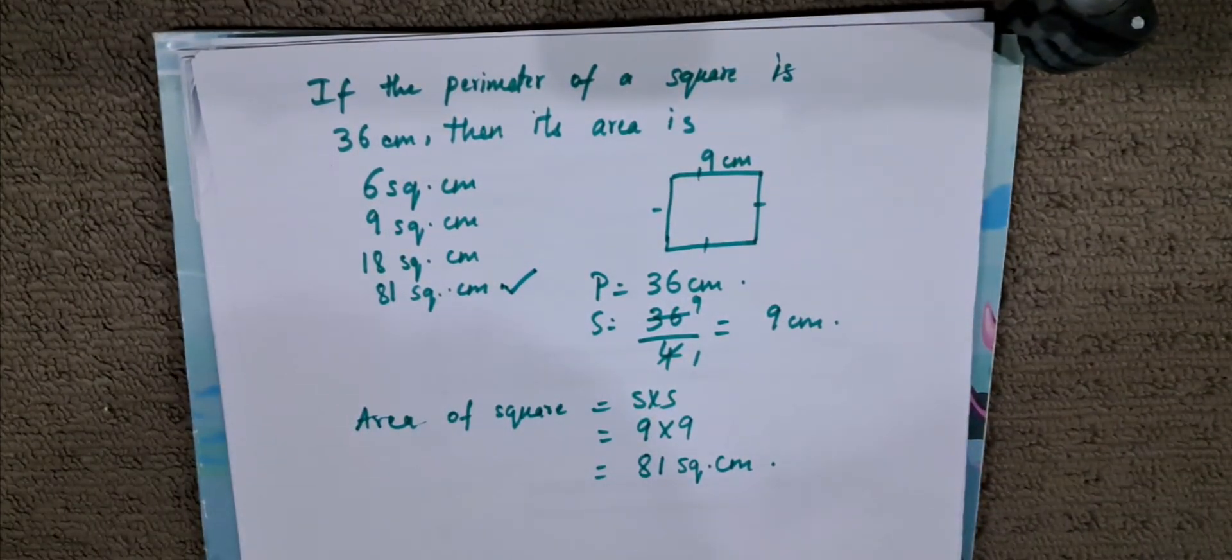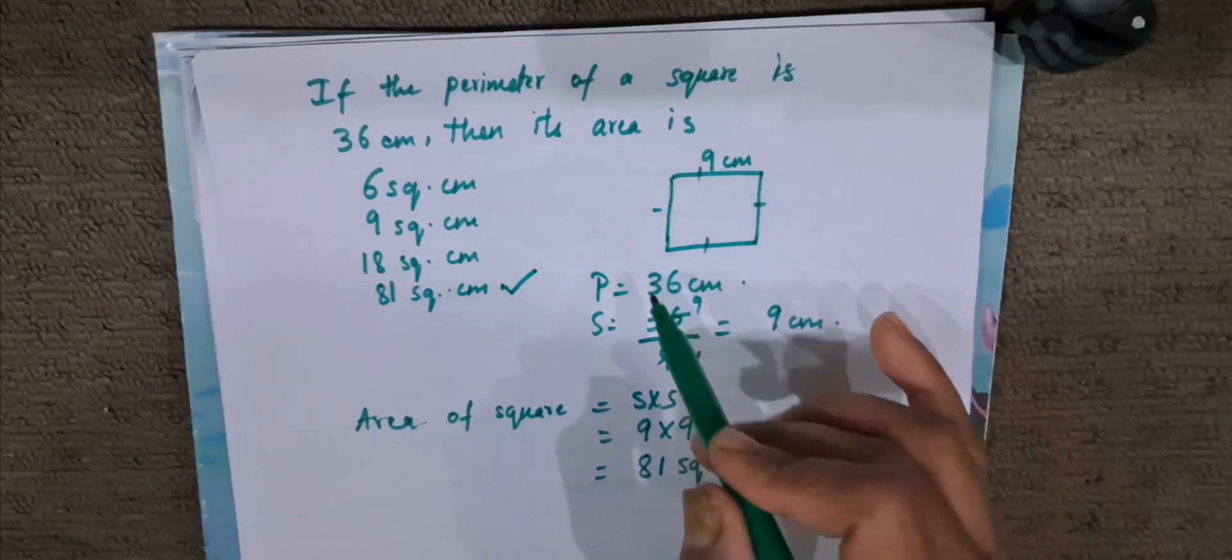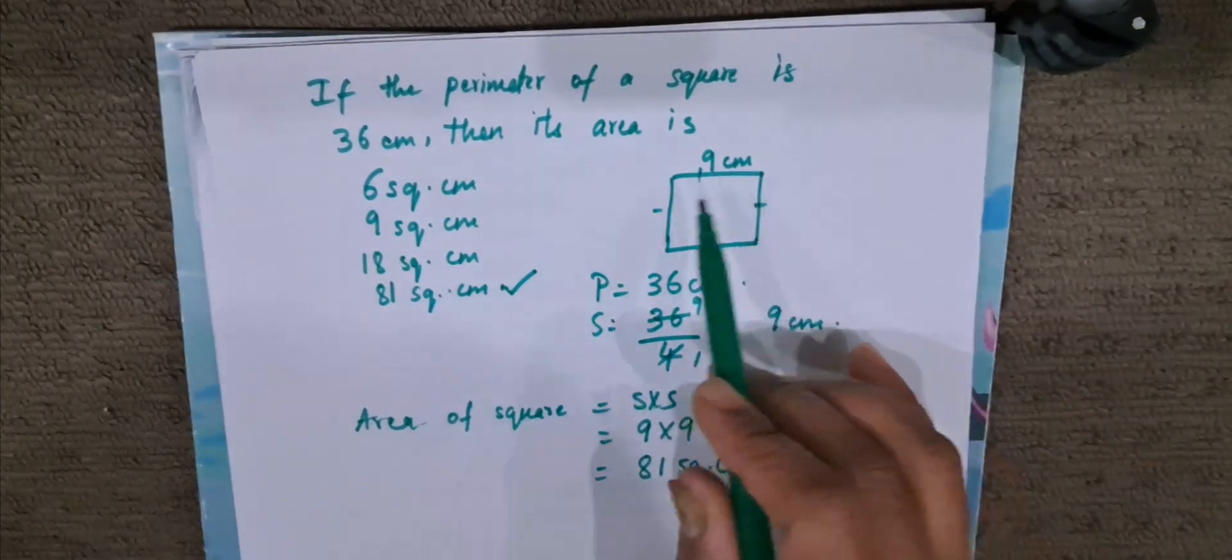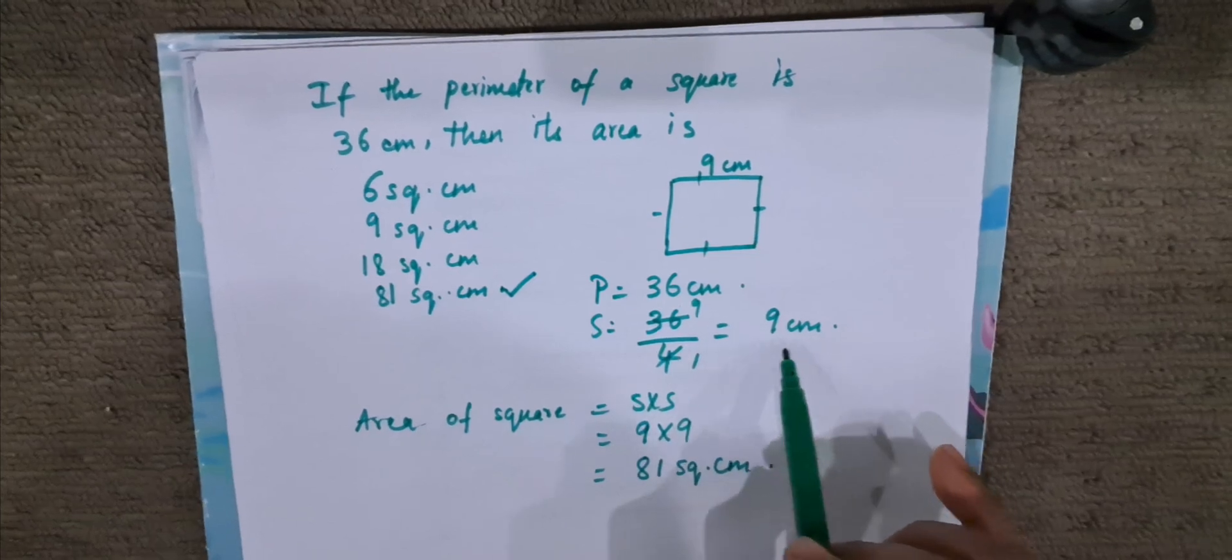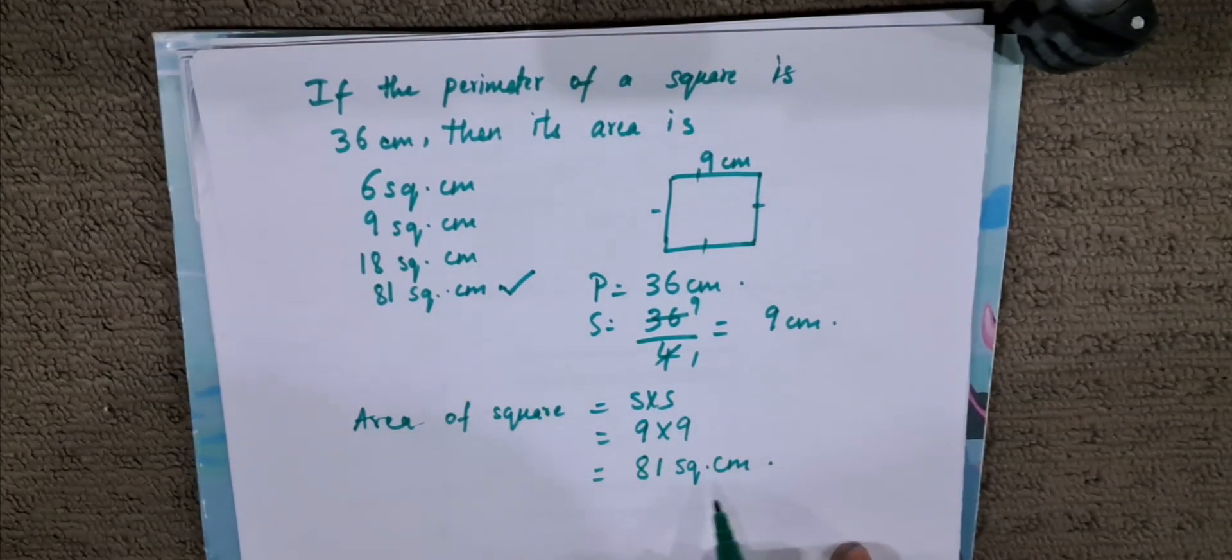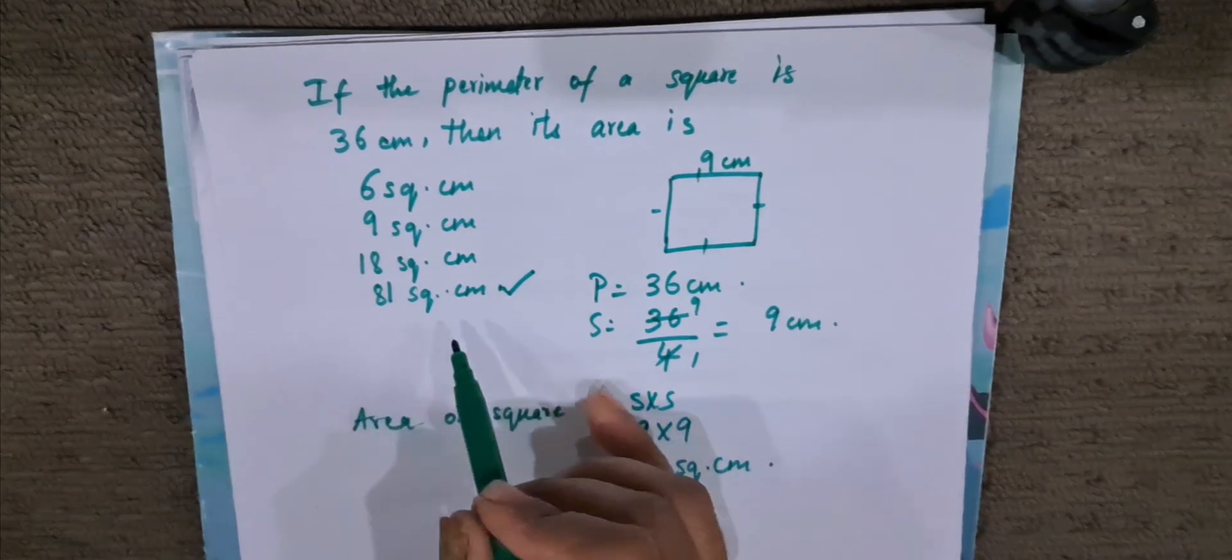This is a very easy sum. They have just twisted it. They have not given the sides; they have given the perimeter. So using the perimeter, we found the sides of the square, and then when we multiply side into side, we got the answer as 81 square cm.